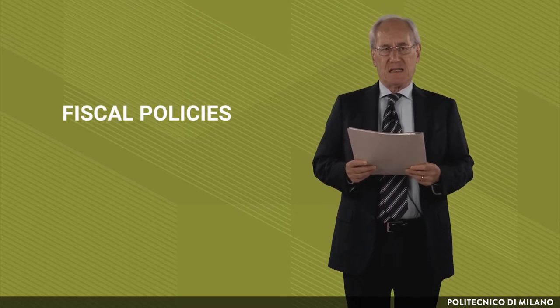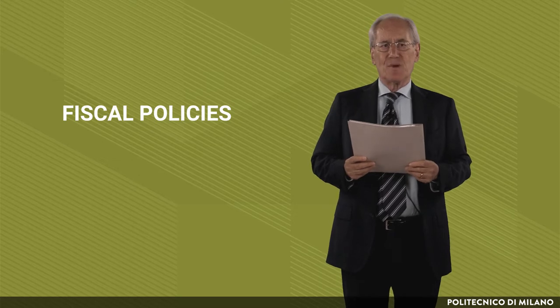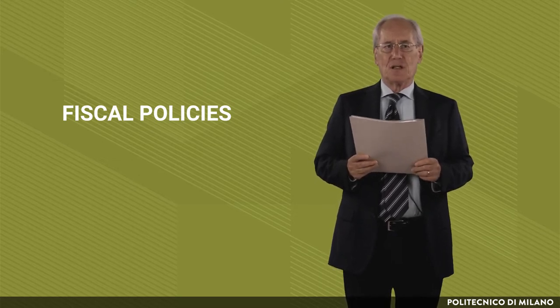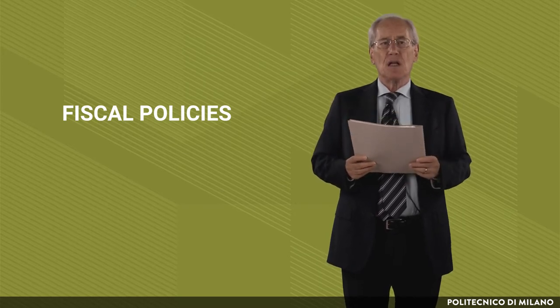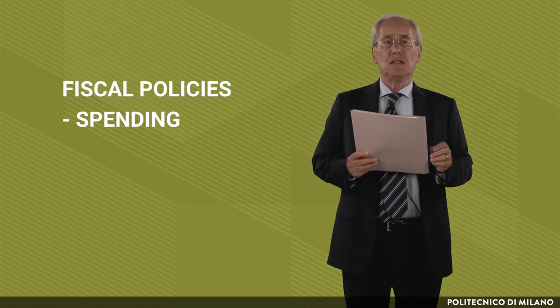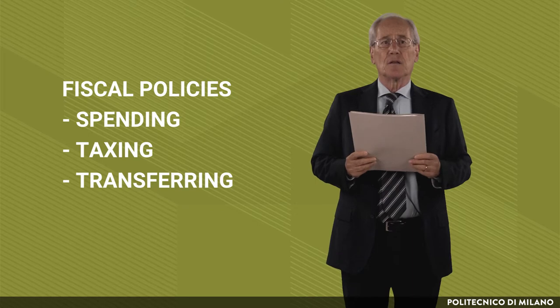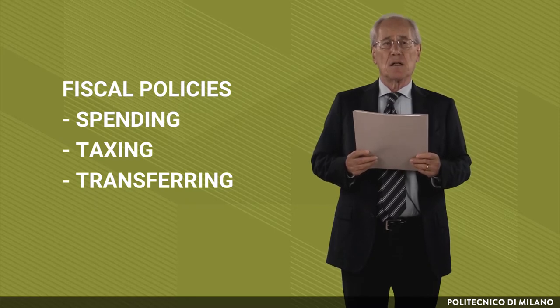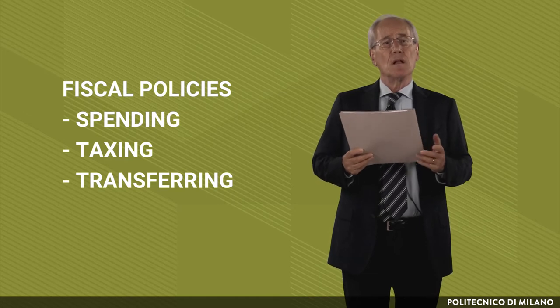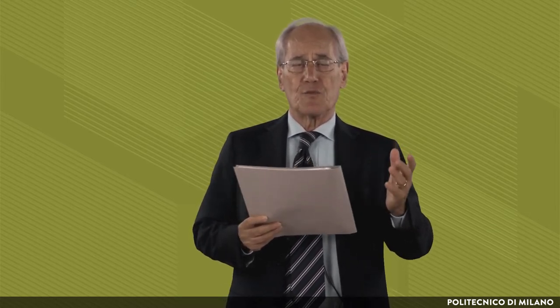Let's start out by sharing what we mean by fiscal policies. Don't get confused by the term fiscal — fiscal doesn't mean taxation only. By fiscal policies we mean the decisions of spending, taxing, and transferring money — decisions that the government takes in many countries upon directions from Parliament. Parliament is the legislator; the government is the executive branch of power. They spend, they tax, and they transfer money across social groups and across individuals.